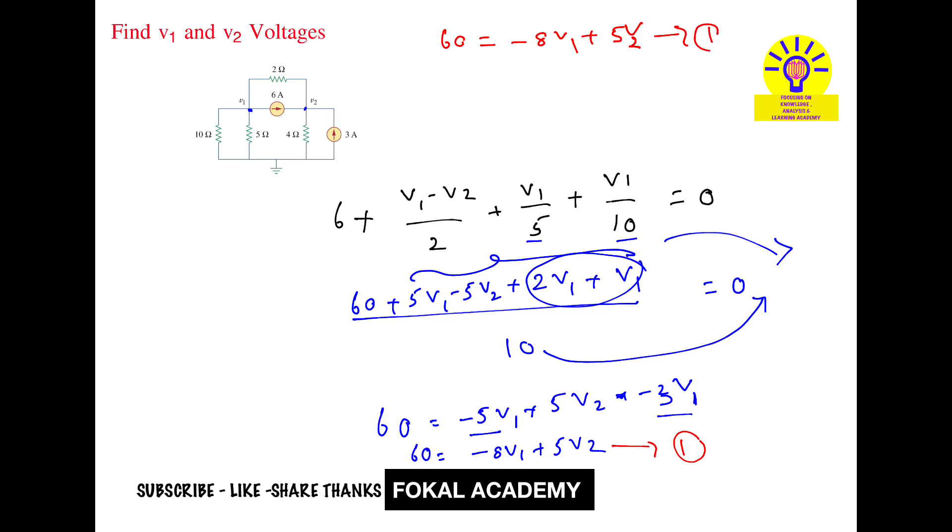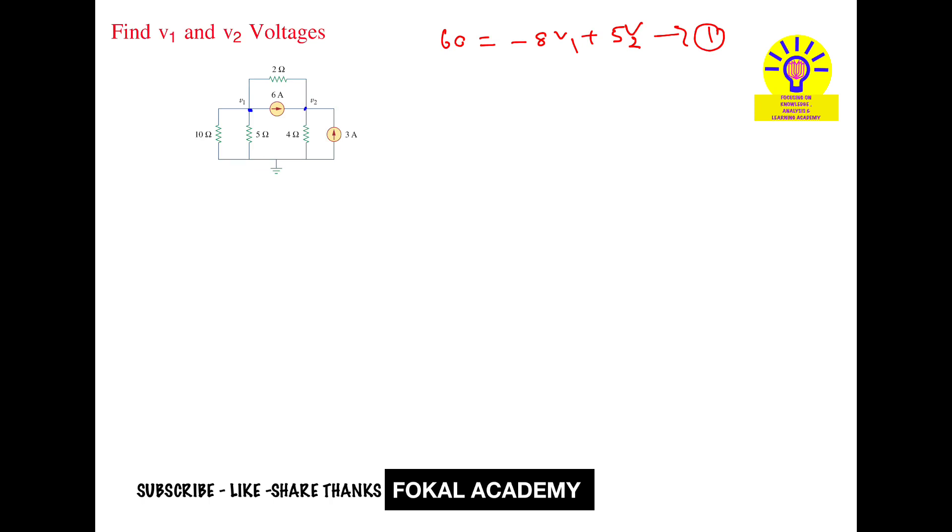Now apply the same node analysis at node 2. At node 2, 6 amperes is entering, 3 amperes is entering, current from 2 ohms is entering, and current leaves to ground through 4 ohms. The sum of these three currents equals the current in 4 ohms. By Ohm's law: 6 plus 3 plus (v1 minus v2) by 2 equals the current in 4 ohms.